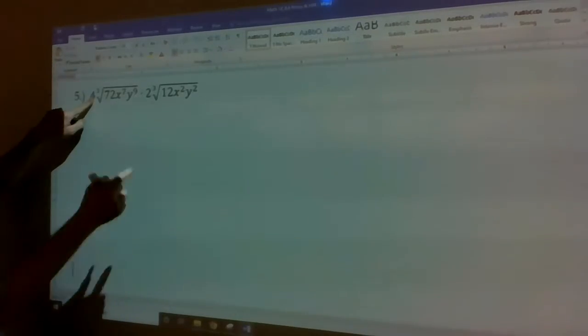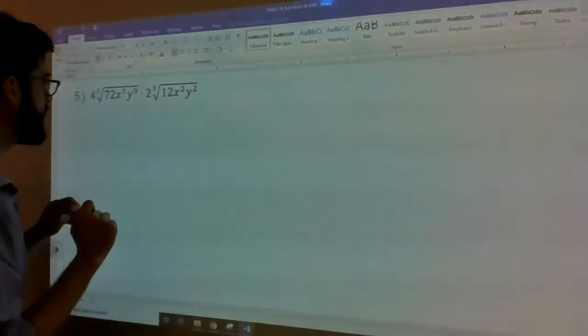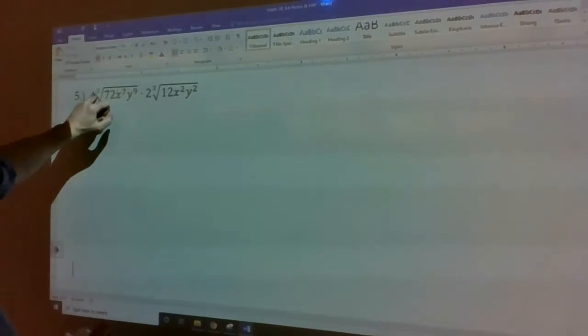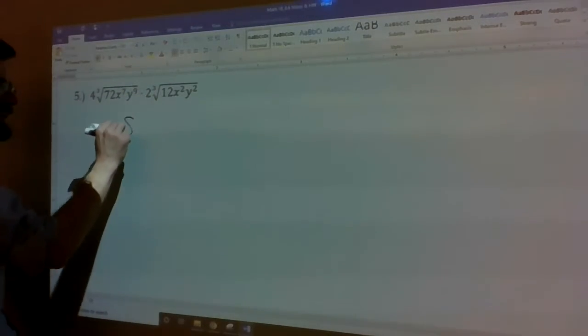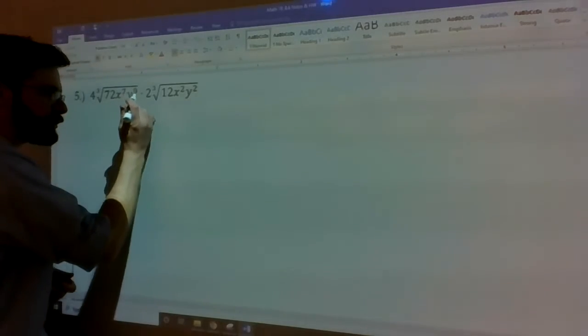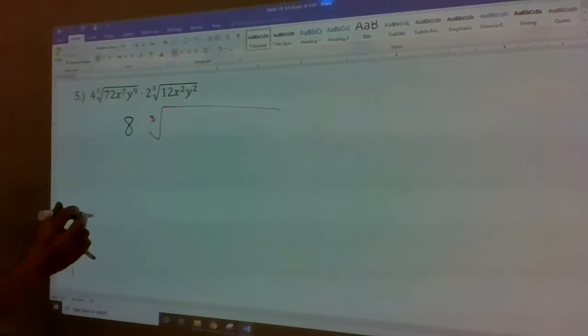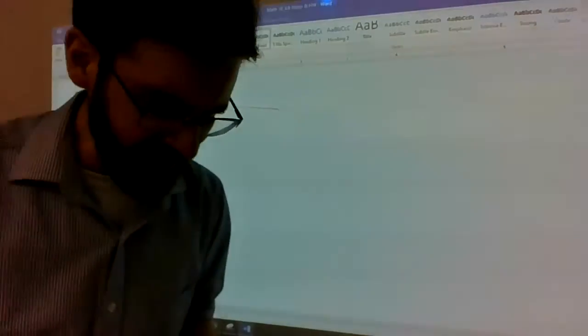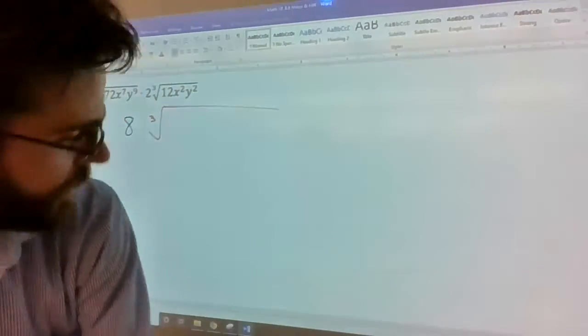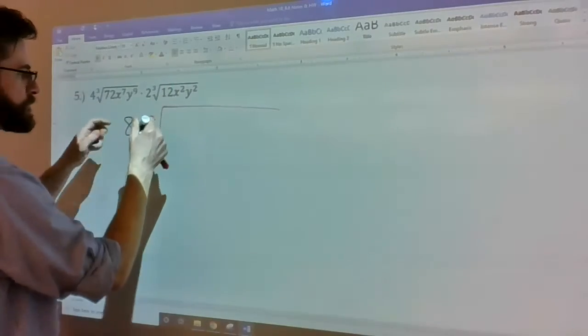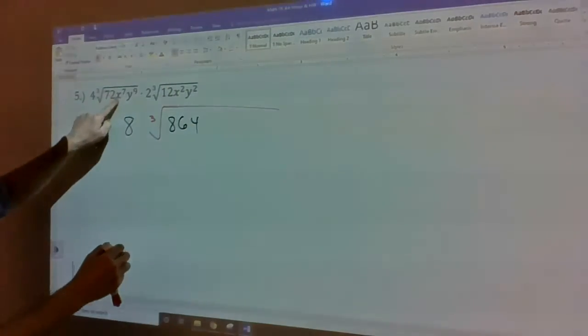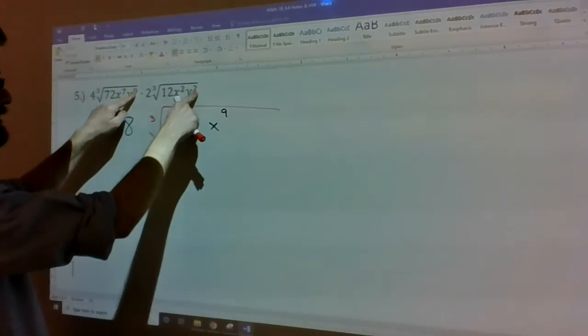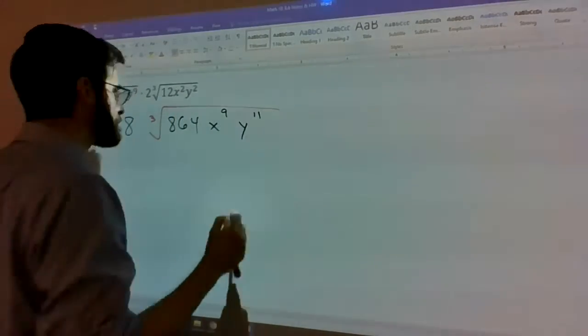So what I got to do is I got to take 4 times 2 because those are the outside quantities. This little 3 is not an exponent for the 4. This little 3 is not an exponent for the 2. They are representations of the actual root themselves. So 4 times 2 is 8. And then we're taking the cube root of 72 times 12, which I don't have that memorized. Let's see, 720 plus, I think it's 864 though. Yeah. So 864 is 72 times 12. 8 of the 7 times 8 of the 2, add those exponents, it's going to be x to the 9. Y to the 9 times y to the 2 is going to be 9 plus 2, which is y to the 11.